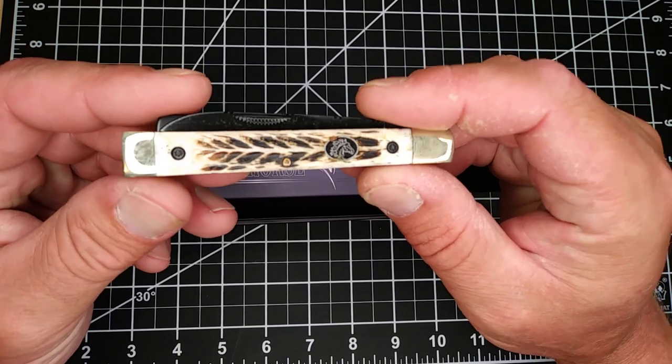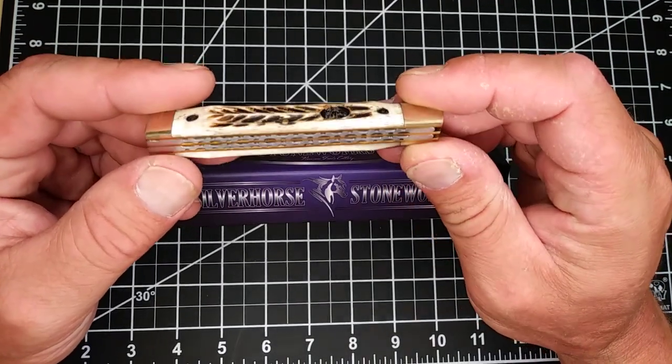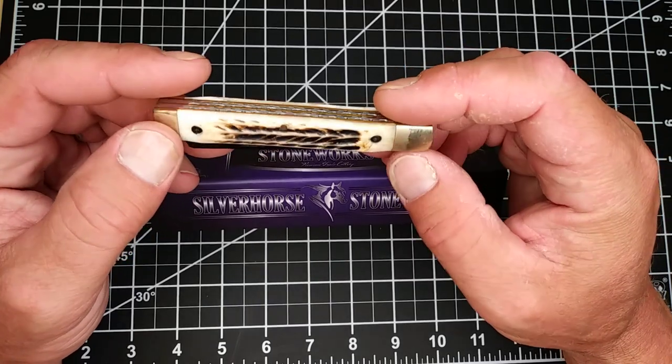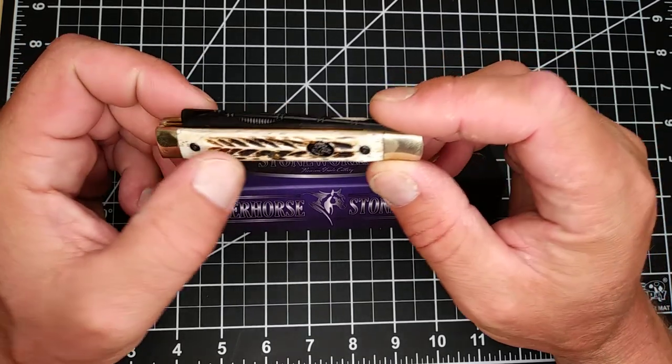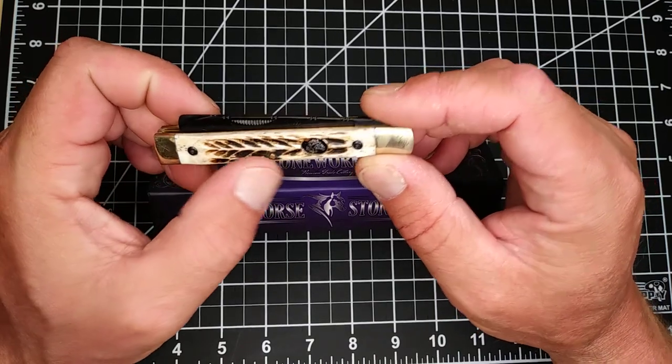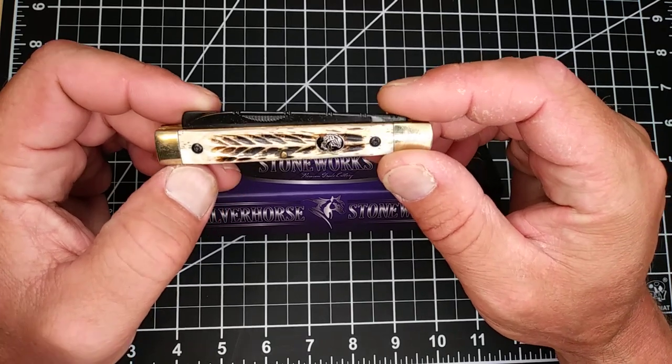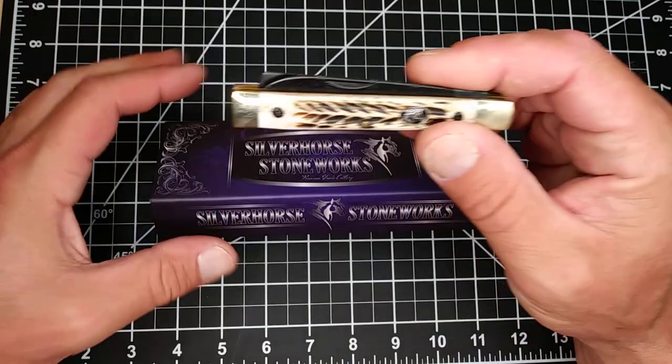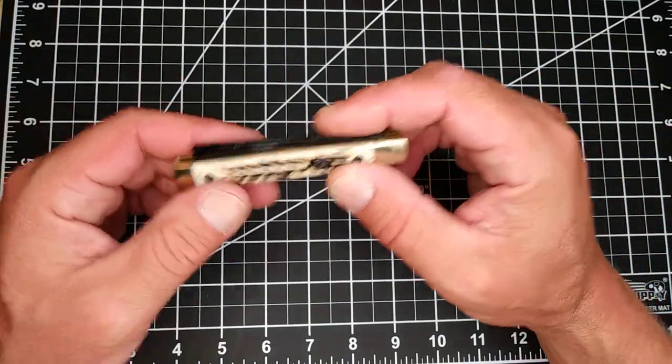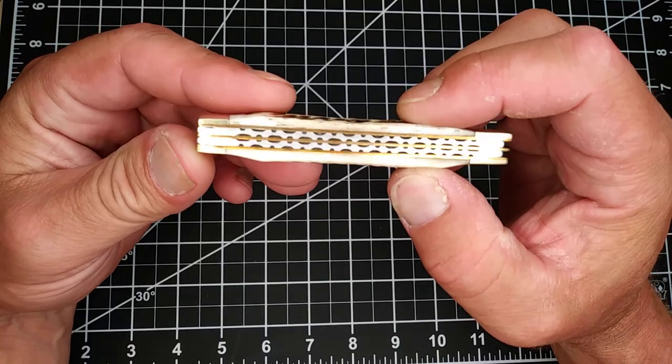Smoky Mountain Knife Works calls it stag bone, but at Chicago Knife Works they call it torched bone, which makes sense. I know stag torches and takes a better burn than bone, so I'm not sure which one it is, but I really like the covers on these.